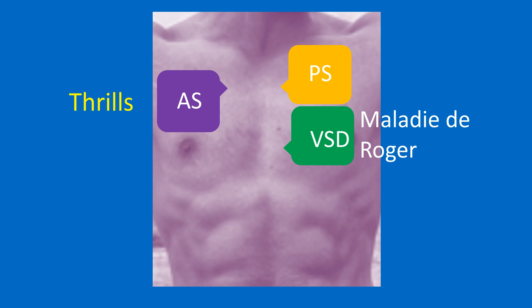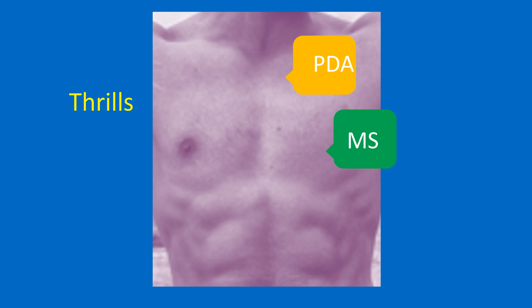In pulmonary stenosis, the thrill is present in the second left intercostal space. Both aortic and pulmonary stenosis produce systolic thrills. The thrill of a small ventricular septal defect is systolic and noted in the left parasternal region. Systolic thrill of mitral regurgitation is felt at the apex. Diastolic thrill of mitral stenosis is highly localized to the apex. Diastolic thrills may occur in aortic regurgitation in the left parasternal region. Continuous thrills in the first and second space on the left side are noted in patent ductus arteriosus.